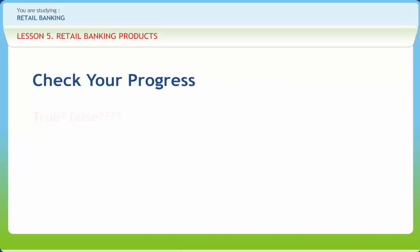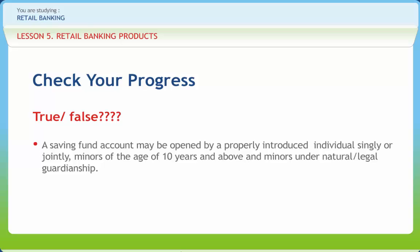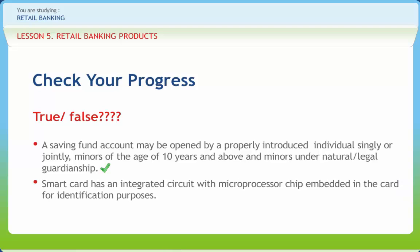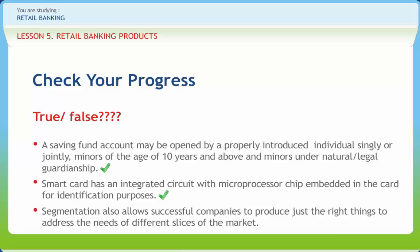Now let us check if we have understood the various concepts discussed in this lesson clearly. A saving fund account may be opened by a properly introduced individual singly or jointly, minors of the age of 10 years and above, and minors under natural or legal guardianship — Right. A smart card has an integrated circuit with a microprocessor chip embedded in the card for identification purposes — Right. Segmentation also allows successful companies to produce just the right things to address the needs of different slices of the market — Right.